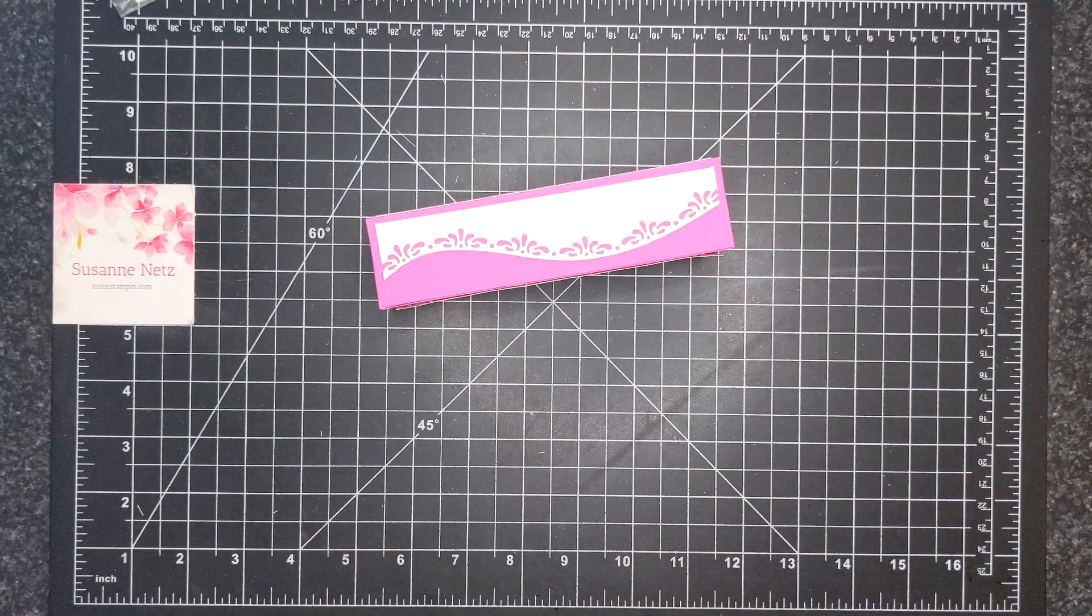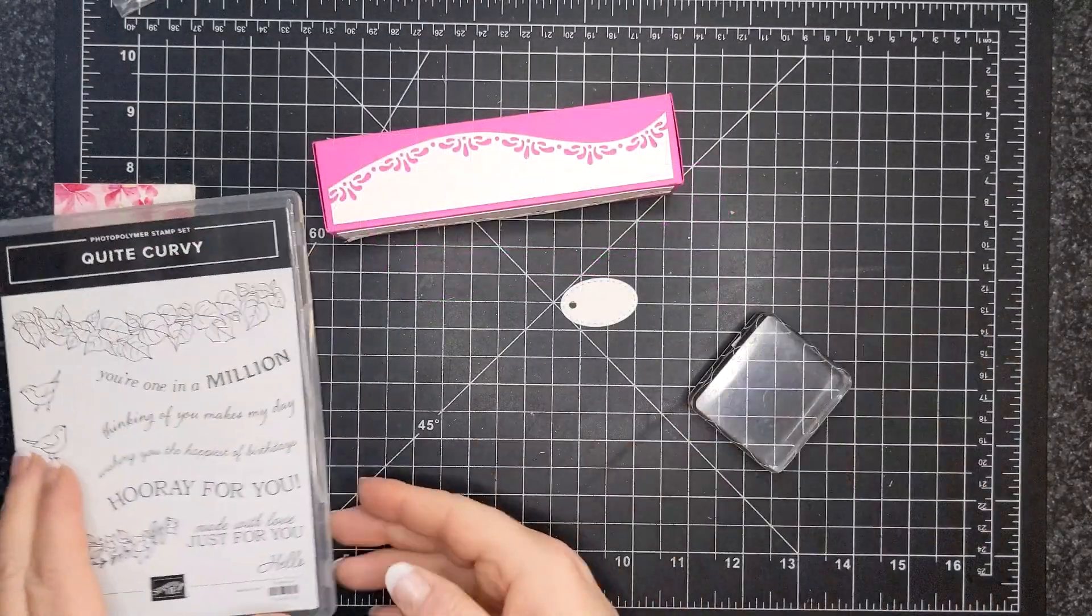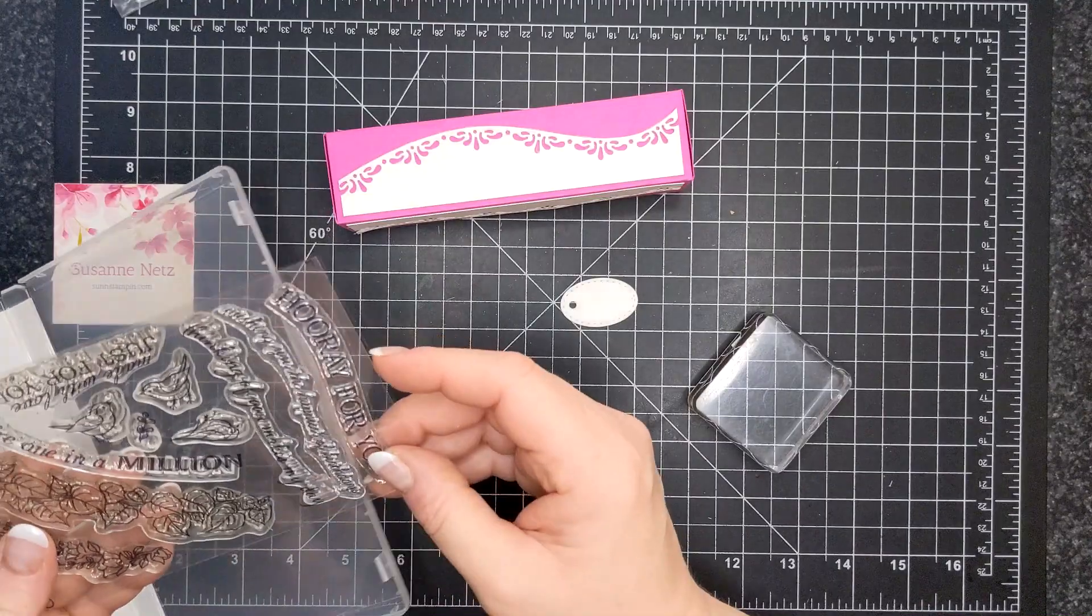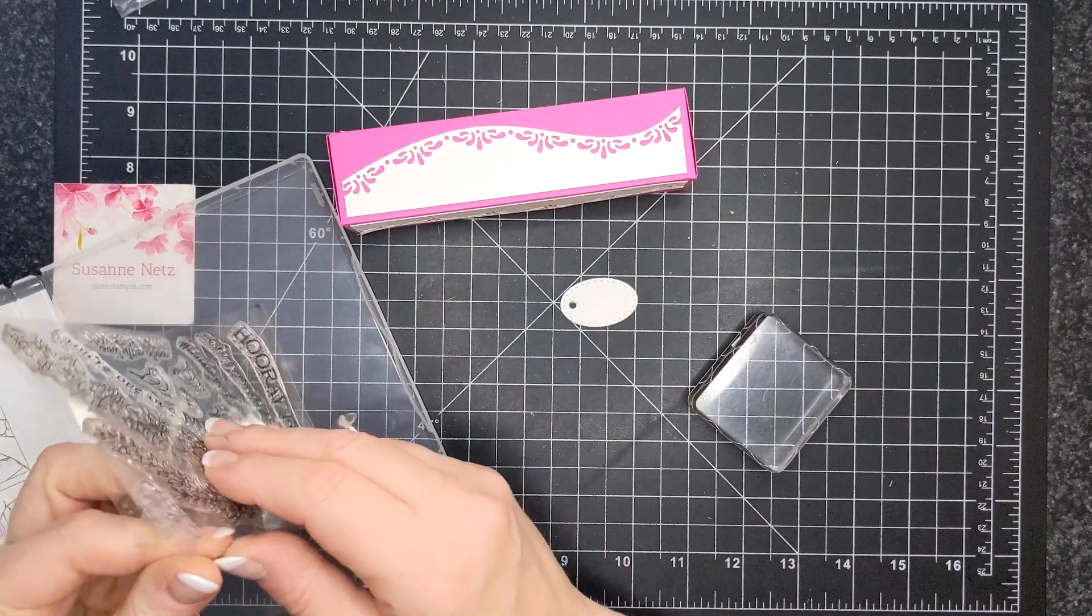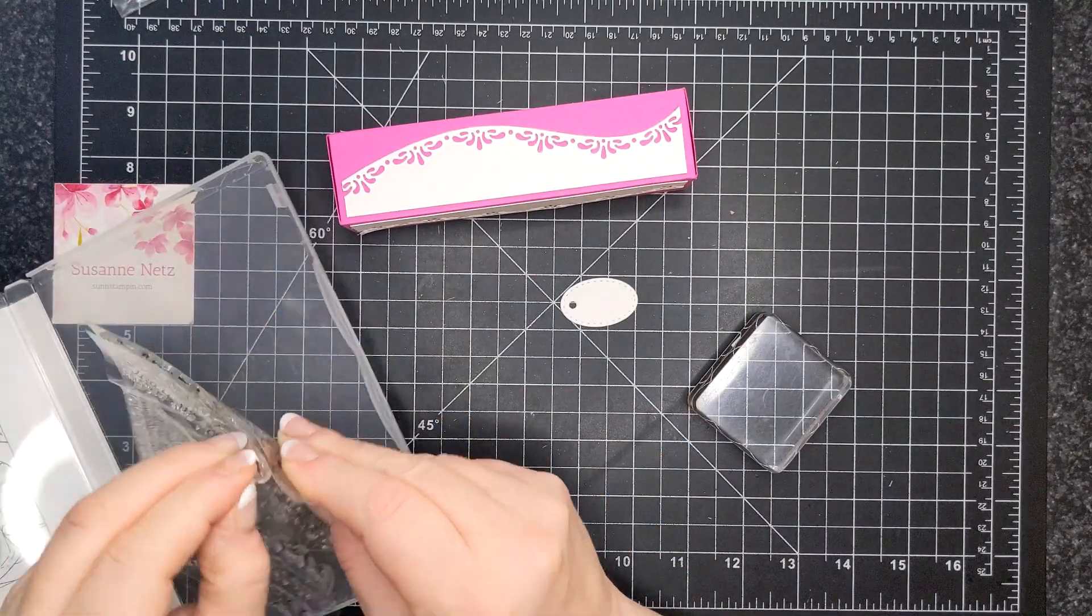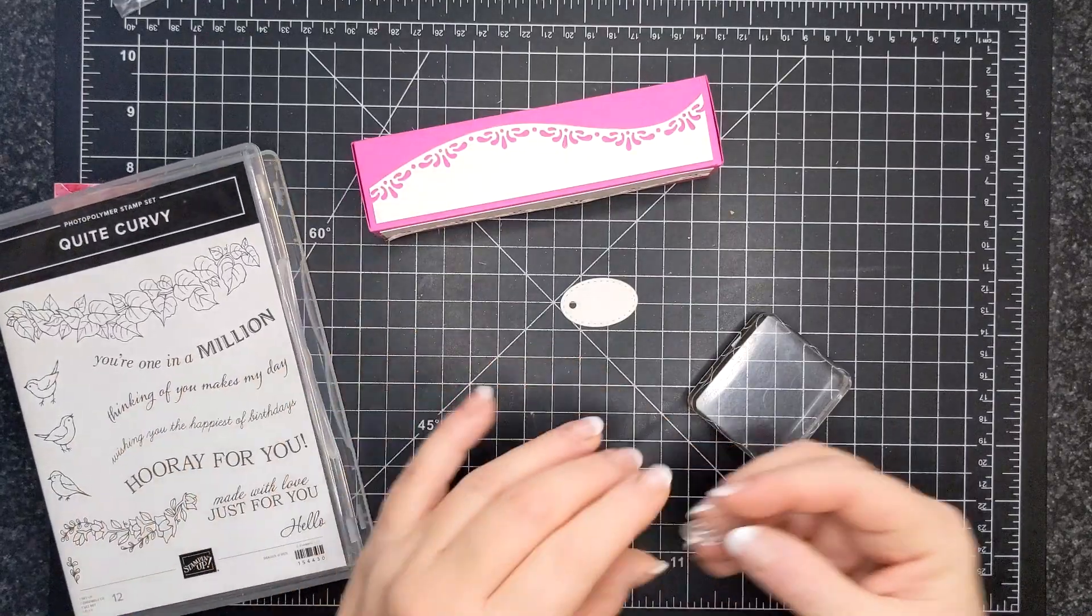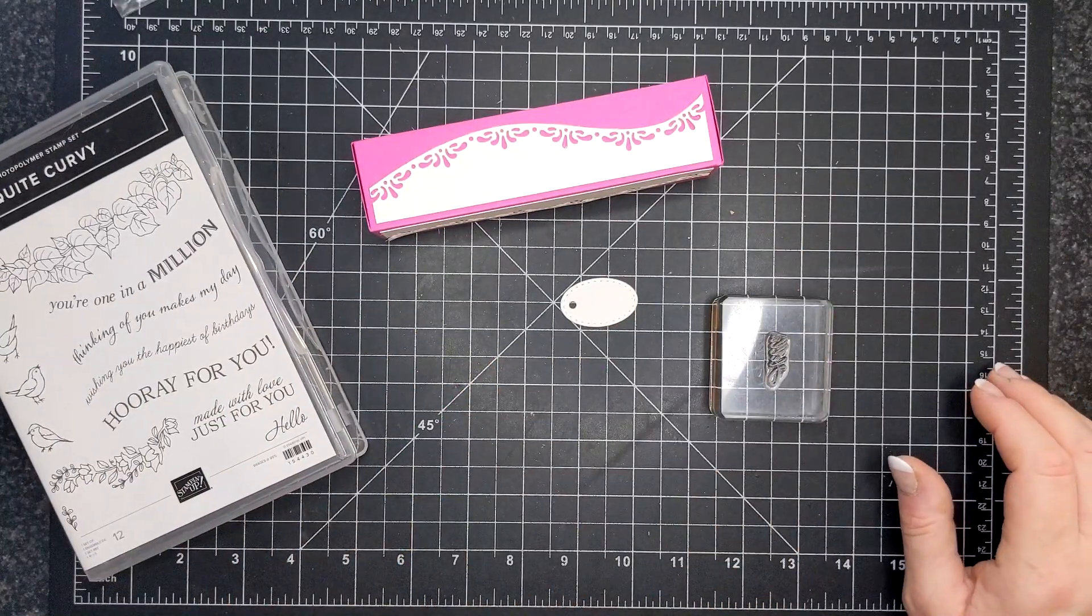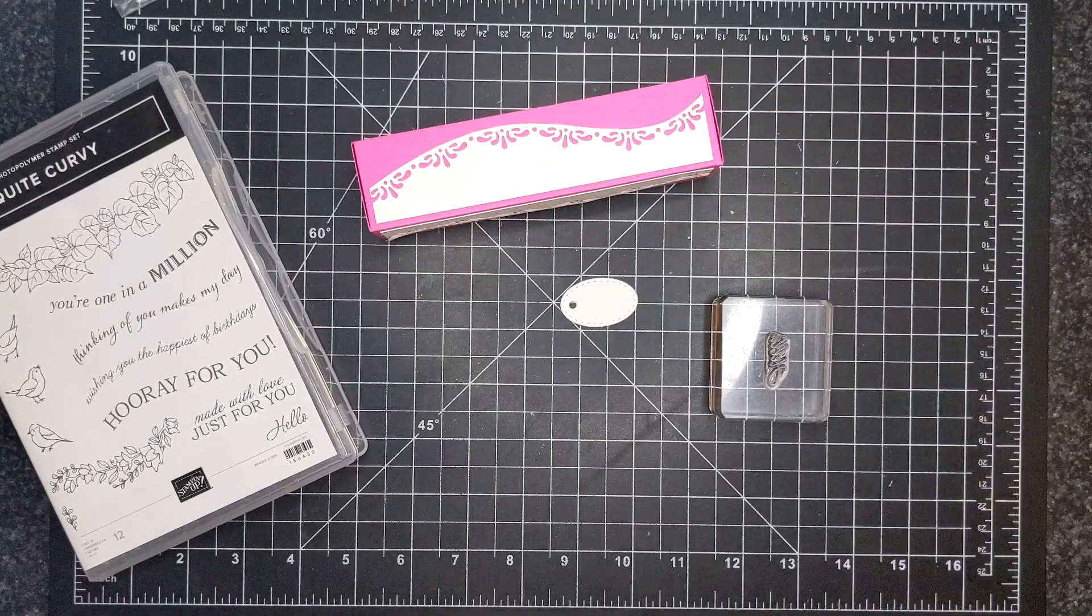So, let's see. Okay, you guys. This is the Quite Curvy bundle, or stamp set I should say. And I'm just going to use the little hello and bring out my Magenta Madness ink.